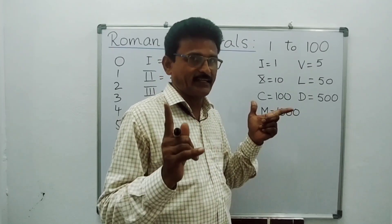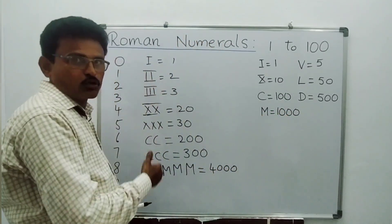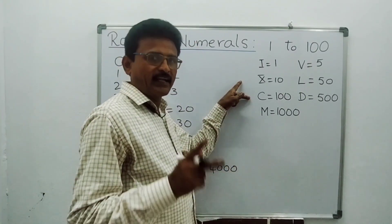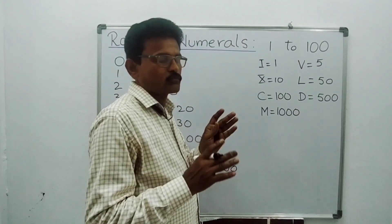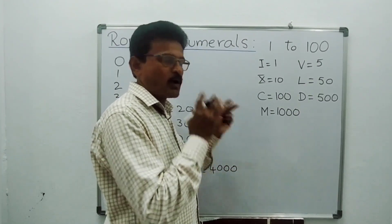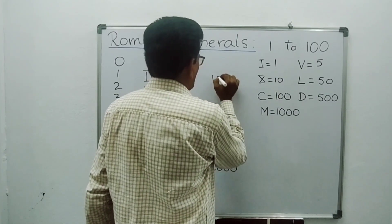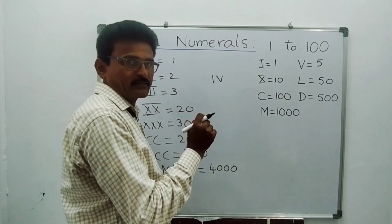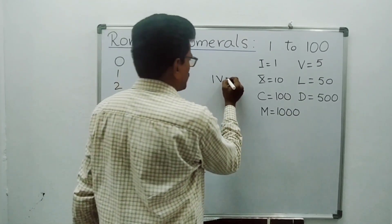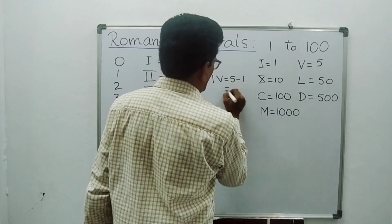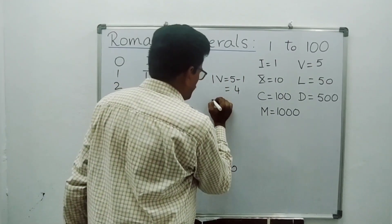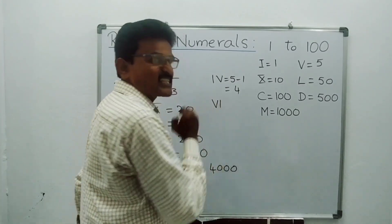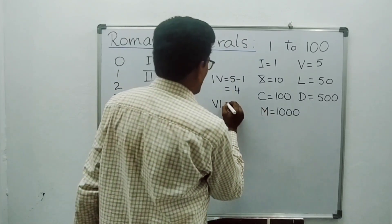V, L, and D are also never subtracted. Now for the subtraction rule: if we write any two numerals side by side, we compare which is bigger and which is smaller. If the smaller one is on the left side, we subtract. For example, IV means 5 minus 1 = 4. If the smaller one is on the right side, we add — so VI means 5 plus 1 = 6.